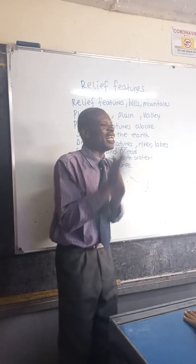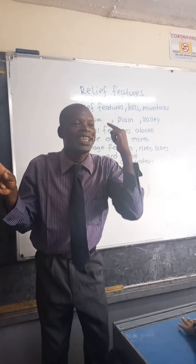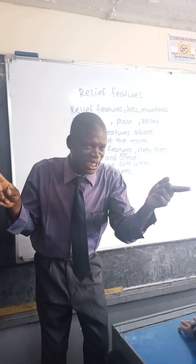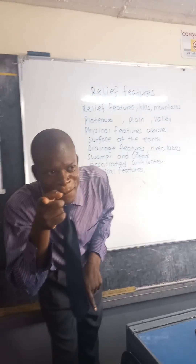Physical features — river, lake, swamps, and ocean associated with water. Do not forget. Just let us connect. See you on the next one.